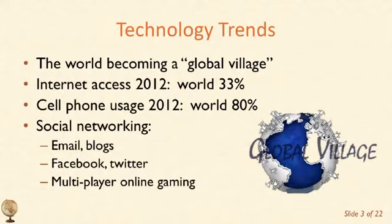English is still the leading language, but Chinese is not far behind. If you look at the top languages used on the Internet today, Chinese is behind English, then comes Spanish, Japanese, Portuguese, German, and Arabic. And English, in terms of use on the Internet, is actually declining in percentage.